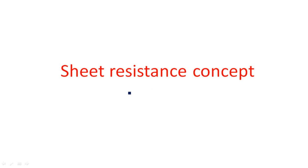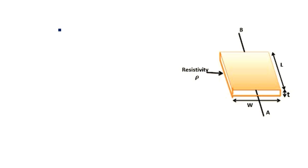First we are going to see the sheet resistance concept. Sheet resistance is indicated by RS. This depends on whatever material we are using to design — for example, P-plus diffusion or N-plus diffusion. Each material has a particular sheet resistance, also called on-resistance.